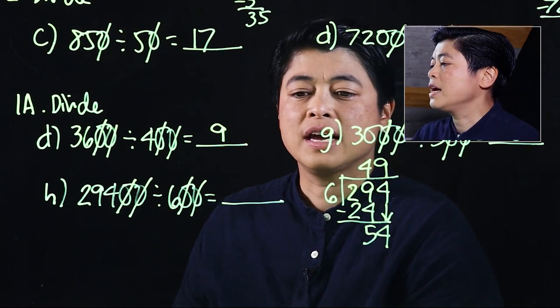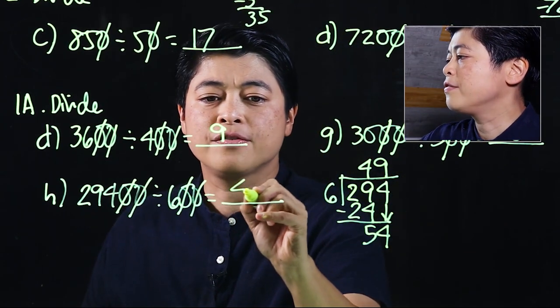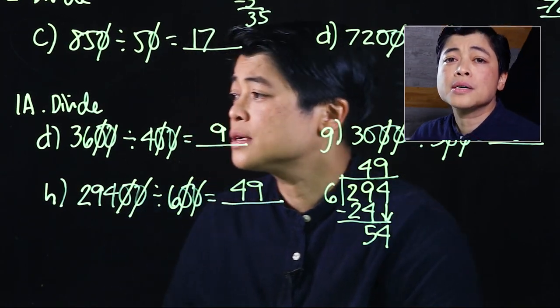That will be 9, so that means this must be 49. So again, when we're dividing by 10, hundred, and thousands, all we need to do is be able to cancel equal amounts of zeros from the dividend and divisor.